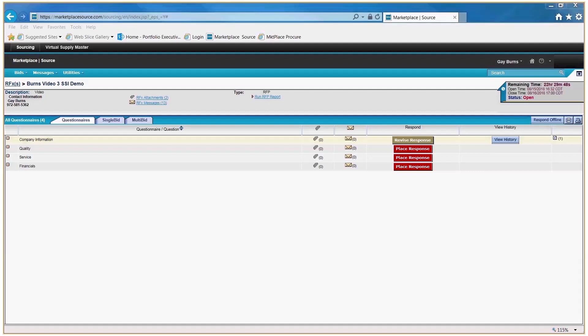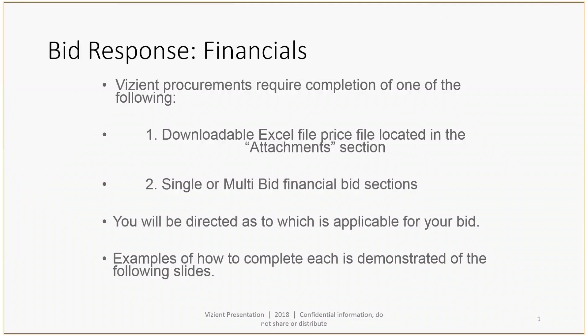For the financial portion of the procurement, you will be asked to do one of two things: complete an Excel file located in the attachments section, or complete the single or multi-bid financial bid sections. It will be one or the other, not both, in our RFPs.